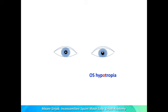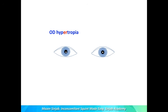Sometimes we may see the patient as having left eye hypertropia, and sometimes we don't see the hypertropia visually. In this case it is R over L.